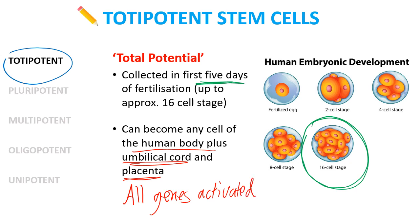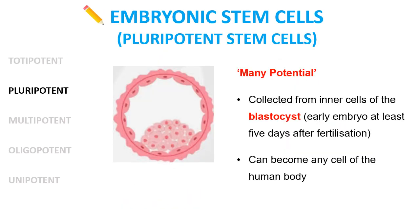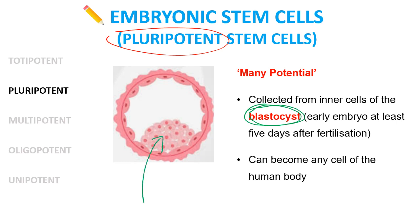If collected that early and regrown, totipotent cells can literally become a full human body including the umbilical cord and placenta — all genes are activated. Every other type of stem cell doesn't use all its genes, so it can't become every type of cell. The next type, embryonic stem cells, are pluripotent — 'pluri' like the word plural, meaning many — these stem cells can become many potential different types of cells, just not all of them.